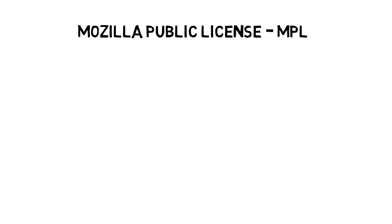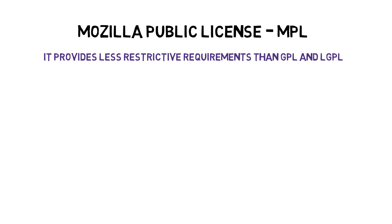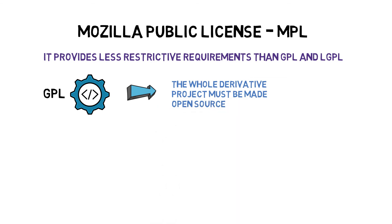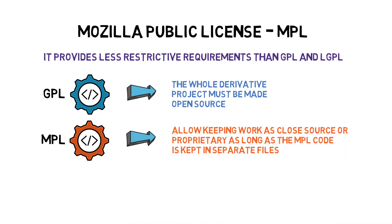The Mozilla Public License, referred to as MPL, is compatible with GPL. It provides less restrictive requirements than GPL and LGPL. In GPL, as long as your project includes a piece of GPL code or links to a library, the whole project must be made open-source as well. However, MPL allows you to keep your own work as closed-source or proprietary as long as the MPL code you are using is kept in separate files. In short, MPL requires the files using MPL code to be kept as open-source, while enabling you to keep your own files as proprietary.